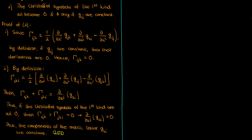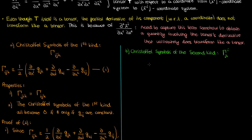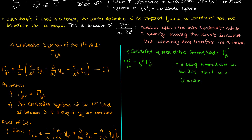Now let's talk about the Christ-awful symbols of the second kind. By definition, they are very closely related to the first kind. The second kind symbol, gamma super i sub jk, equals the inner product of the contravariant metric tensor g super ir and the first kind Christ-awful symbol gamma sub r, j, k. Since r is repeated twice on the right-hand side, it gets summed from 1 to n, where n is the dimension of the space. I'll call this equation 2. Note that g super ir is the contravariant — or inverse — metric tensor.